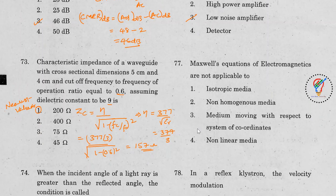Question 77: Maxwell's equations of electromagnetics are not applicable to a medium moving with respect to the system of coordinates. The other options — isotropic media, non-homogeneous medium, and non-linear media — do not apply here.